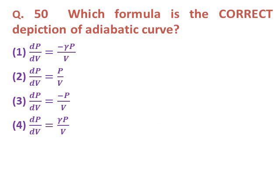Question fifty: Which formula is the correct depiction of an adiabatic curve? Option one: dp/dv equals minus gamma P/V. Option two: dp/dv equals P/V. Option three: dp/dv equals minus P/V. Option four: dp/dv equals gamma P/V. The correct answer is option one — dp/dv equals minus gamma times P upon V.